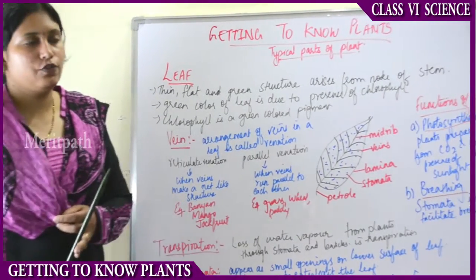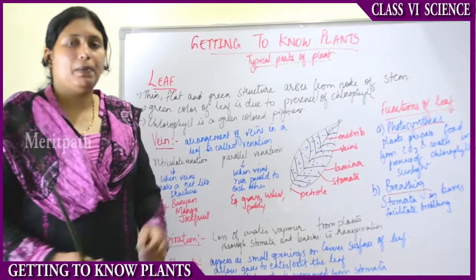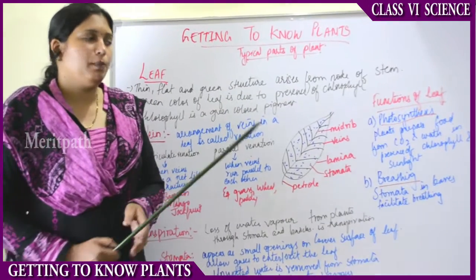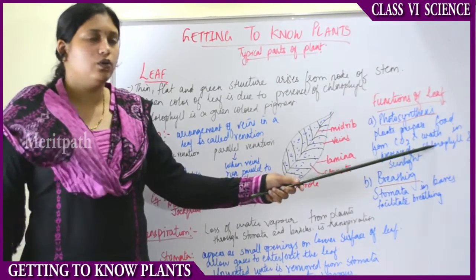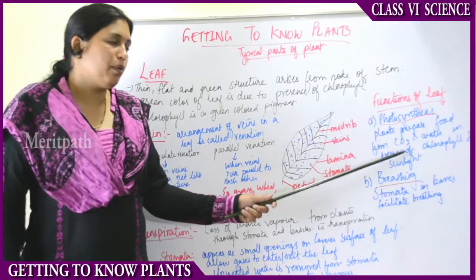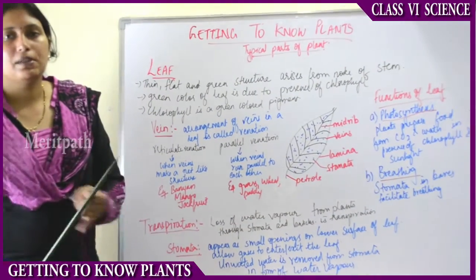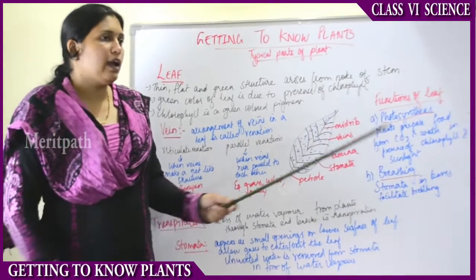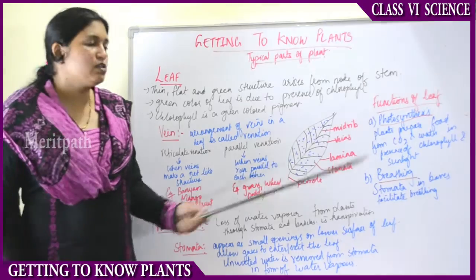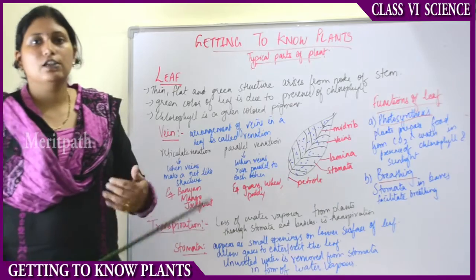Plants prepare food from carbon dioxide and water. They take in carbon dioxide during the daytime in the presence of sunlight for preparing food, along with water. So plants prepare food from carbon dioxide and water in the presence of chlorophyll and sunlight. This activity is known as photosynthesis — the main function of the leaf.